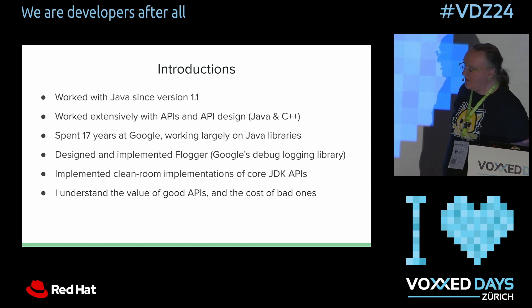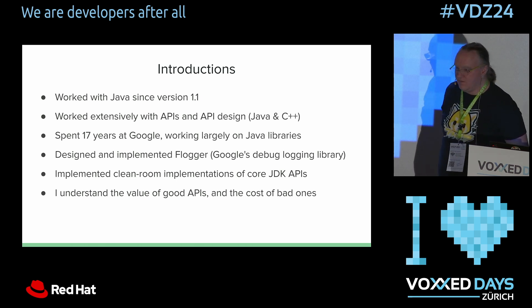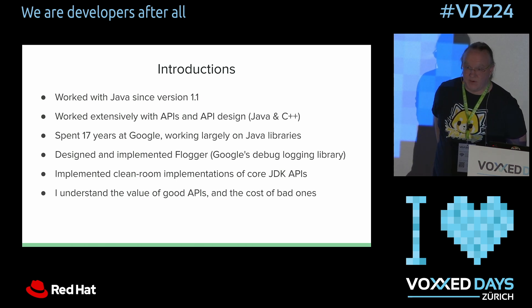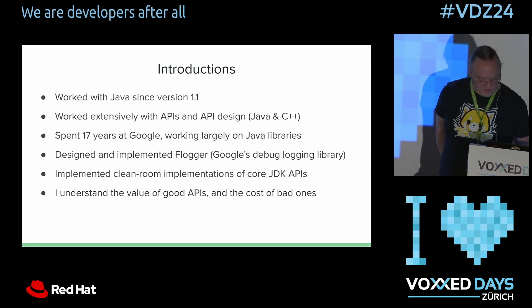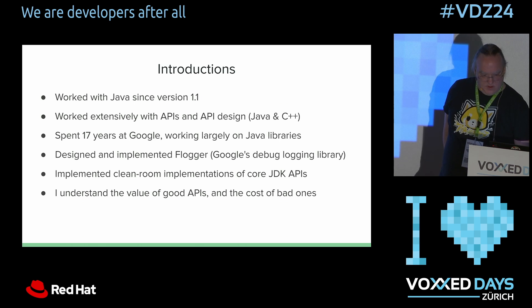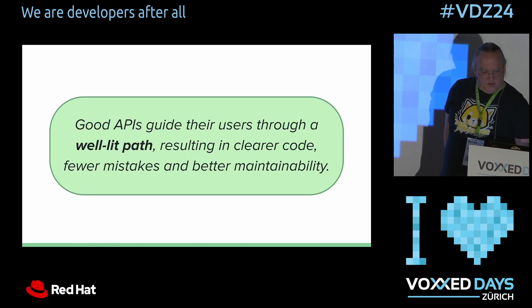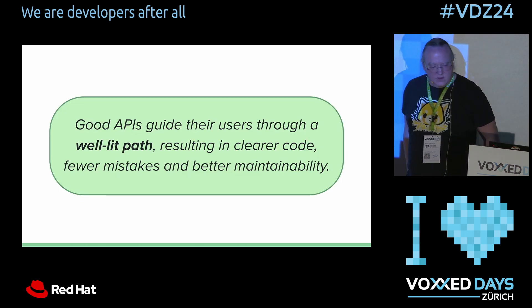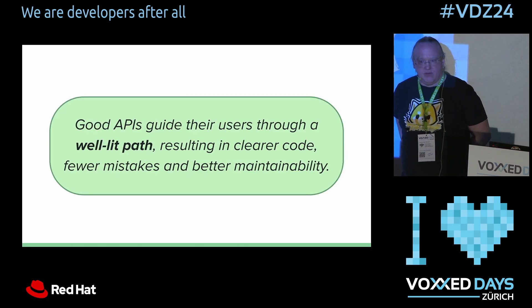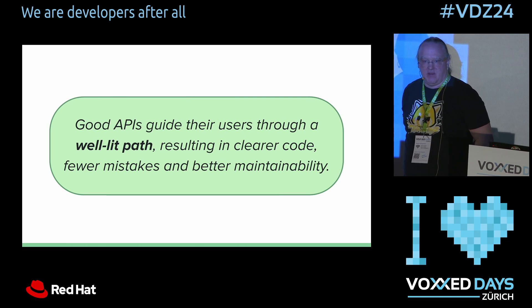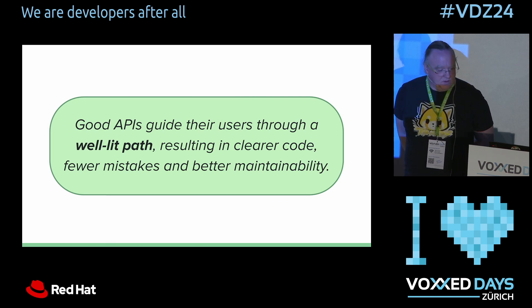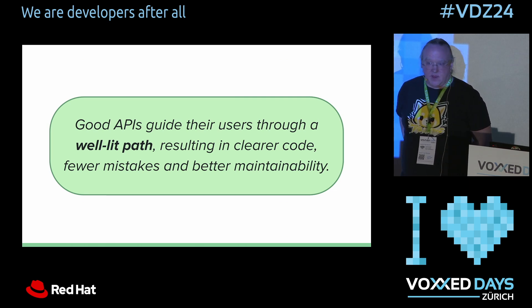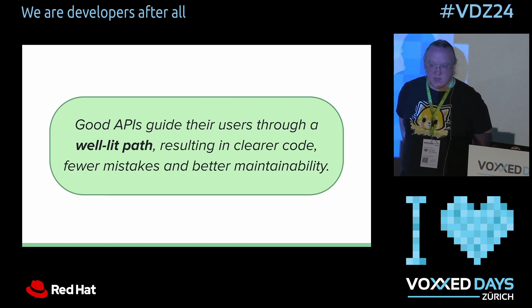I've seen both sides of good and bad API choices. I believe I understand the value of good APIs and I've seen the cost of bad ones. Good APIs guide the user through a well-lit path. They give you clearer code, fewer mistakes, and better maintainability.